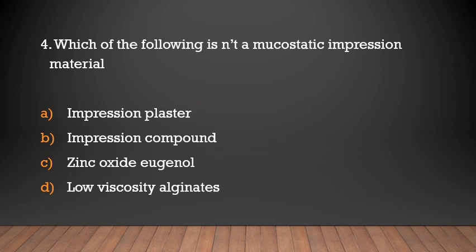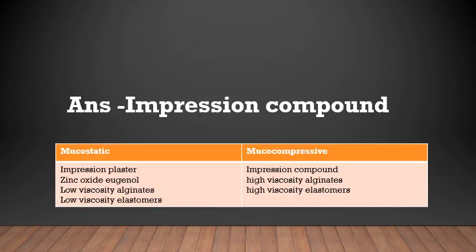Which of the following is not a mucostatic impression material? Options: impression plaster, impression compound, zinc oxide eugenol, low viscosity alginates. Answer: Impression compound. Mucostatic materials include impression plaster, zinc oxide eugenol, low viscosity alginates, and low viscosity elastomers. Mucocompressive materials are impression compound, high viscosity alginates, and high viscosity elastomers.